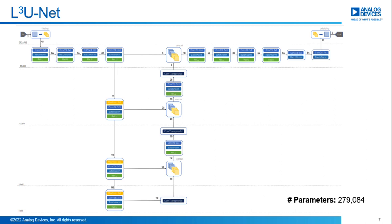I know this slide is pretty hard to read, but we wanted to show our model for completeness. It's a tiny version of a U-Net model. At the beginning of the model, we have our data folding stage, and at the end, we unfold the data back to the higher resolution. The rest is just a tiny version of the U-Net.